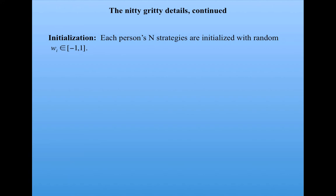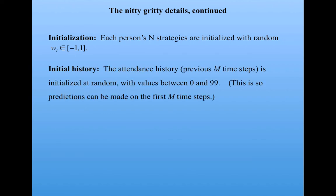To start off with, everybody's N strategies are initialized with random weights. Everybody's given an initial history so that they can actually start making decisions. The previous M time steps is initialized at random with some value between 0 and 99, so we can make some predictions on the first M time steps.